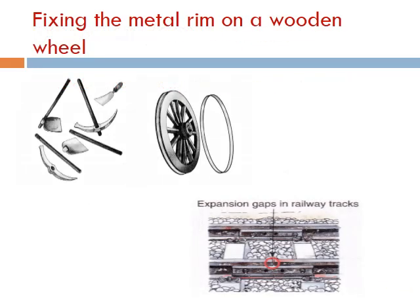Have you seen tools used for digging soil such as a spade? We use the same principle of expansion for fitting the handles of these tools into their metal rings — like fixing the metal rings on a wooden wheel of a cart. In this process, the metal rim is made slightly smaller than the wooden wheel. On heating, the rim expands and fits onto the wheel. After this, cold water is poured over the rim, which contracts and fits tightly onto the wheel.